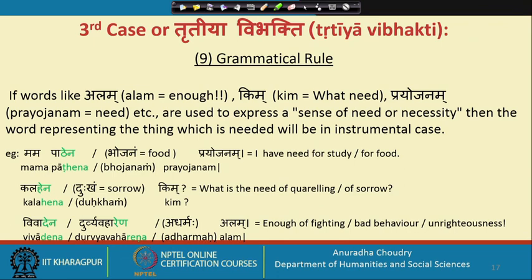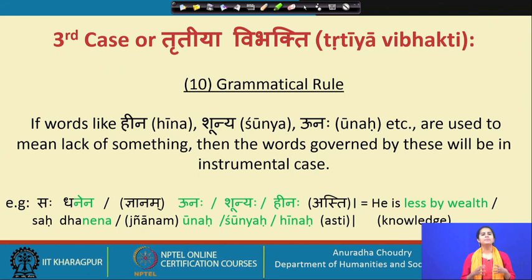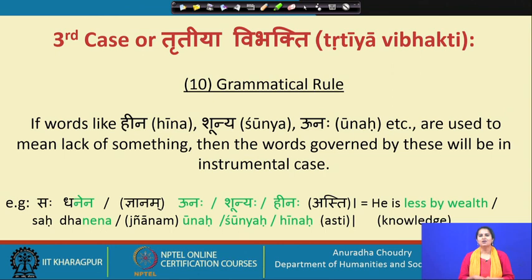The ninth rule says that if words like alam (enough), kim (what need), or prayojanam (need) are used to express necessity, the word representing the thing needed will be in the instrumental case. For example: mama pathena prayojanam — I need to study. Mama bhojanena prayojanam — I need food. Kim kalahena — what need for quarreling? Dukkhena kim — what need of sorrow? Vivadena alam — enough of quarreling. Durvyavaharena alam — enough of bad behavior. Adharmena alam — enough of unrighteous behavior.